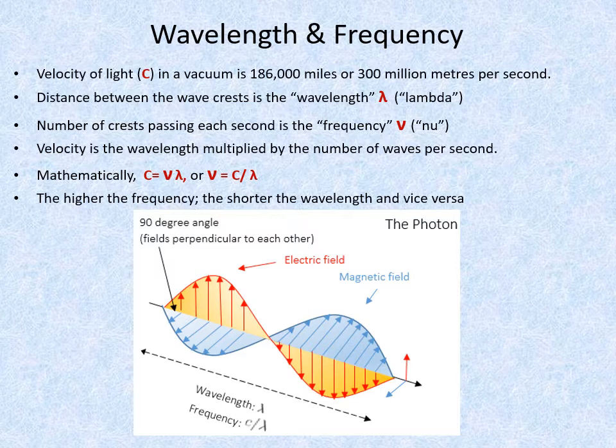All electromagnetic waves move through space with velocity, wavelength and frequency. The velocity of light in a vacuum is 300 million metres per second. The distance between the crests of the waves is the wavelength, lambda. The number of crests passing any fixed point per second is the frequency, nu. The velocity is the length of each wave multiplied by the number of waves per second. Or mathematically, c equals nu lambda. The higher the frequency, the shorter the wavelength, and vice versa.